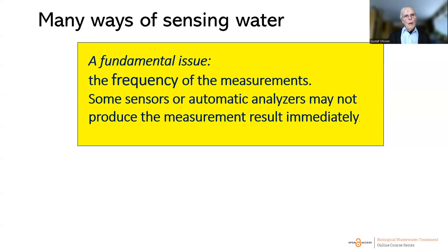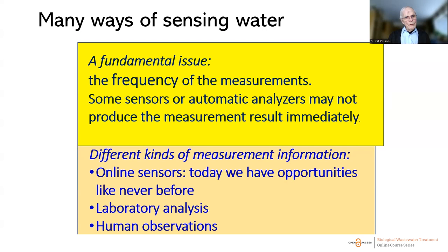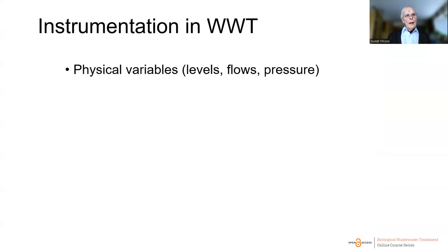The measurement frequency depends on the dynamics described in the previous lecture. Some sensors or automatic analyzers are dynamic in that they don't present results immediately — you have to wait, and that has to be considered in the control decision. Measurements are not only online sensors, but also laboratory analysis and human observations, and all of this together provides the information necessary for good operation.